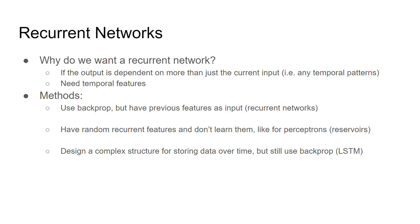So a quick summary: why do we want a recurrent network? We need one if our output is dependent on more than just the current input. You can always feed all past information as a big input, but you'll have a giant number of weights and will probably need lots of data to train. So that's part of why people go with a recurrent network instead. Backprop is definitely a learning method for this, or you can use random features for reservoirs, or use a more complex structure for storing data over time and still use backprop — that's the general reasoning behind all these different methods for recurrent networks.